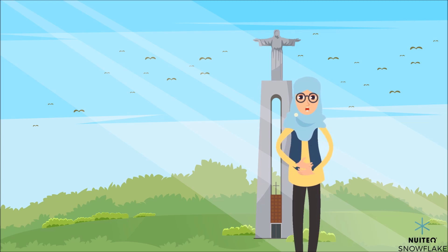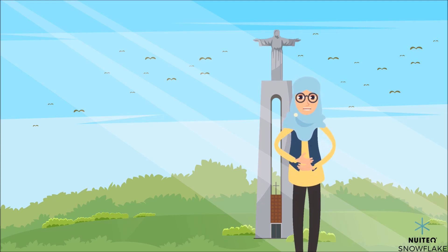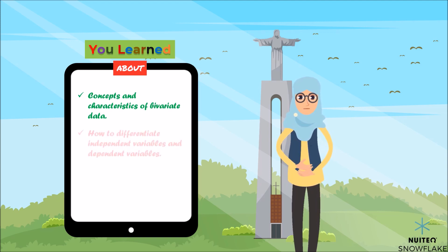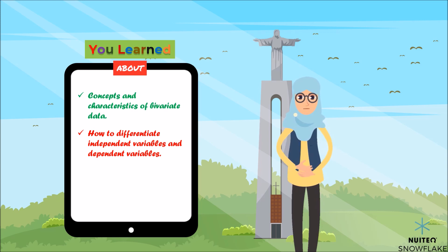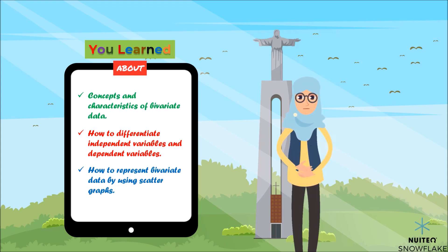So, what do you say? Can you continue recognizing bivariate data in real-world situations? Just remember that today you learned the concepts and characteristics of bivariate data, how to differentiate independent variables and dependent variables, and how to represent bivariate data by using scatter graphs. Practice a lot and you will see that you will be better at it. I have to go now.